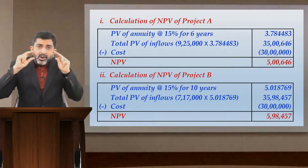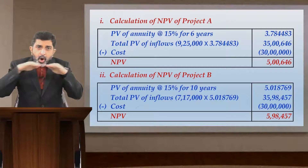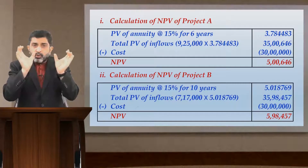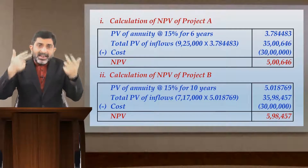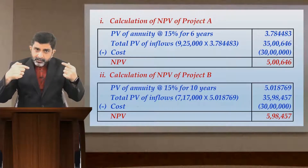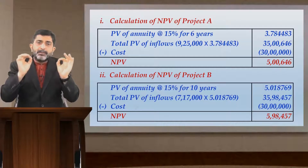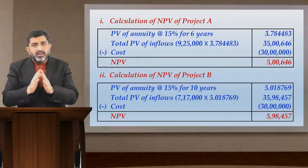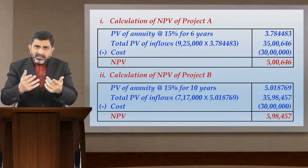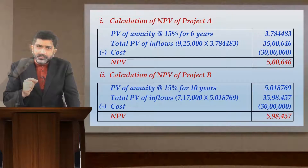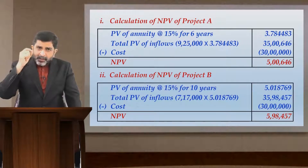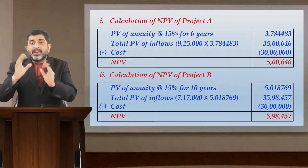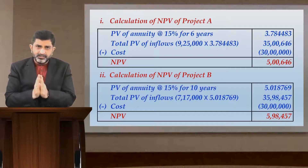When you convert an NPV into an equivalent amount of annual NPV, we call that process annualization. In the annualization process, you are converting a present value into annual values. The logic is simple.